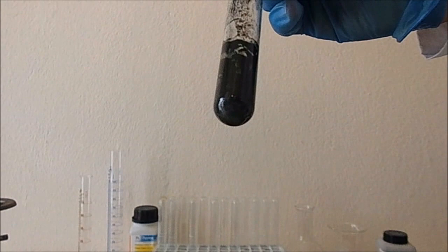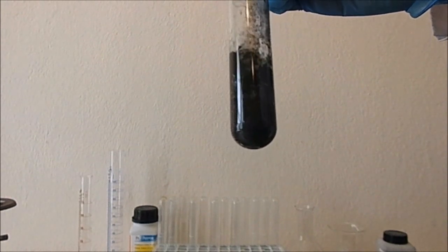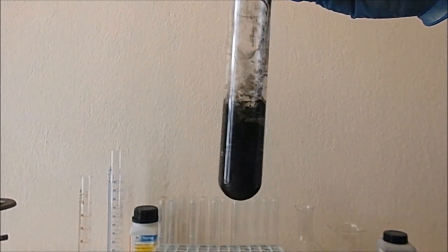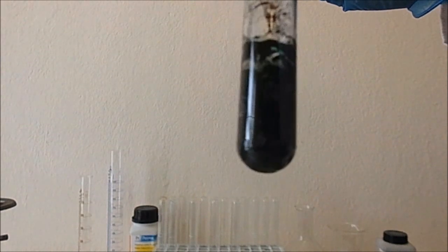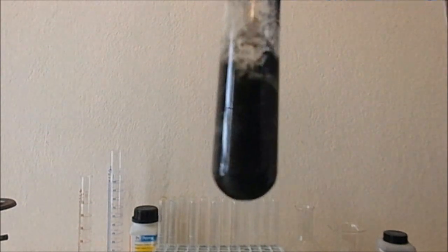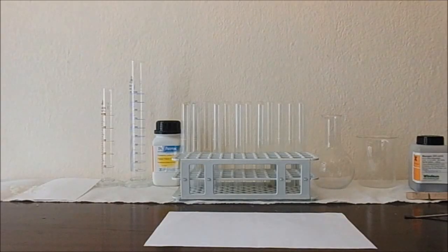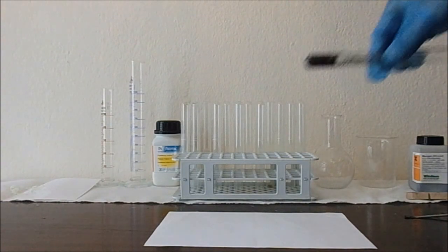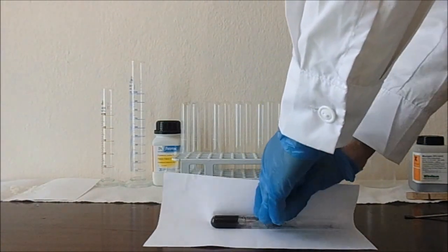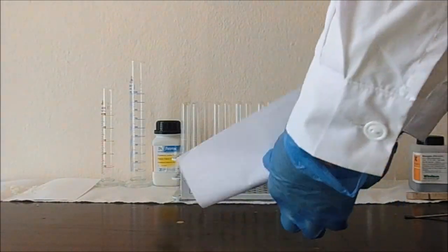After the reaction has stopped, you will see a green solid on the glass. This is sodium manganate. We need to extract this, but it's a bit hard to dissolve it in the tube. A hammer will do the job. Break the test tube and try to collect most of the green chunks of sodium manganate.